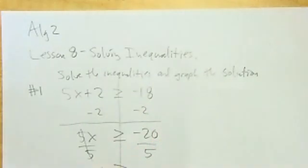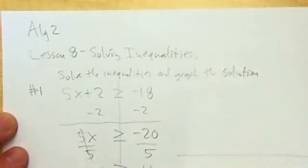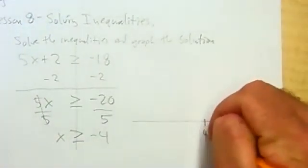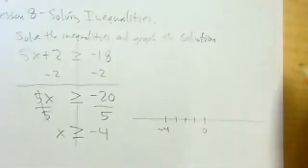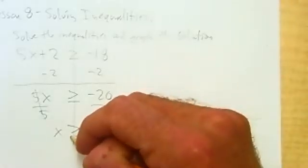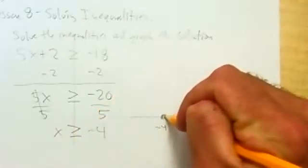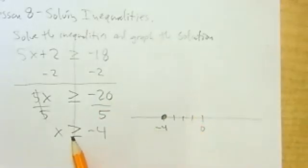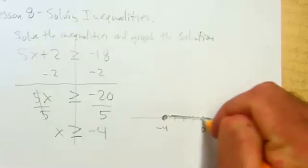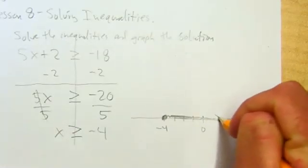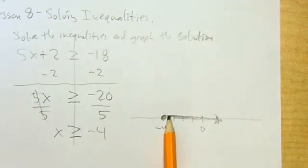x is greater than or equal to -20 over 5, which is -4. And then you're supposed to graph that solution out on a number line. So here's 0, -4. Remember, closed circle if it's equal to. We put a closed circle there so that it could equal -4, but it's greater than or equal to, meaning it's anything to this side. So darken this way, put an arrow to show that it keeps going.